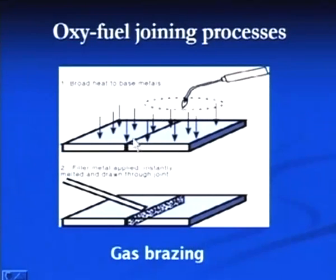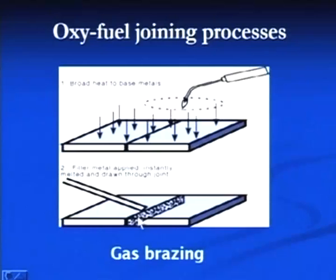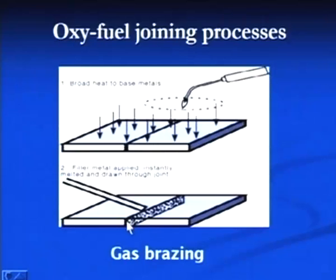The next oxy-fuel joining process is gas brazing, in which an oxy-acetylene flame is used for heating the faying surfaces to be joined. The brazing material or filler material is placed near the heated zone, and because of the heat, the filler material melts and by capillary action it is sucked into the areas where the joint is to be produced.